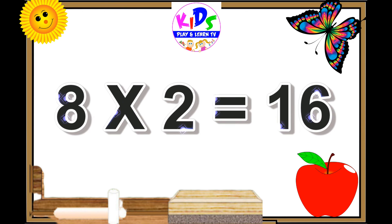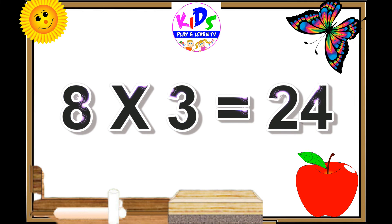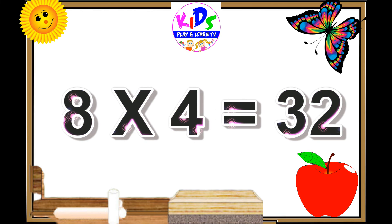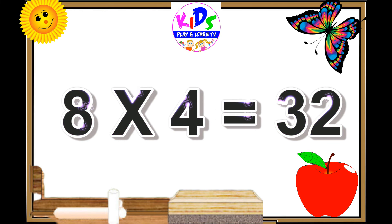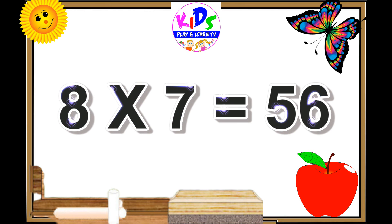Eight ones are eight. Eight twos are sixteen. Eight threes are twenty-four. Eight fours are thirty-two. Eight fives are forty. Eight sixes are forty-eight.